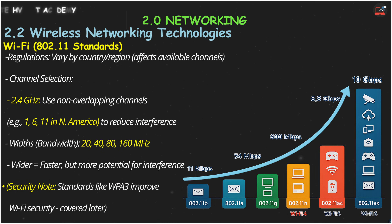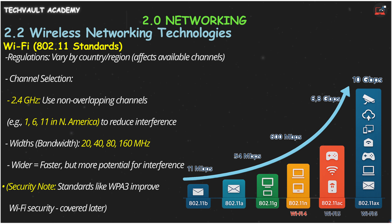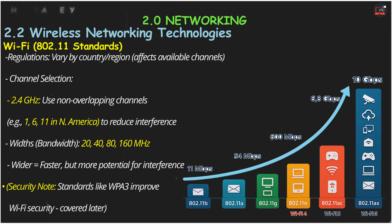The bandwidth, or channel width, is how wide these lanes are. Common widths are 20, 40, 80, or 160 MHz. Choosing a wider channel, like 80 or 160 MHz, can make your Wi-Fi faster, but it also uses more of the available spectrum and might increase interference, especially in busy areas.